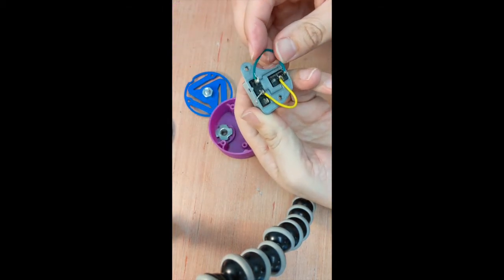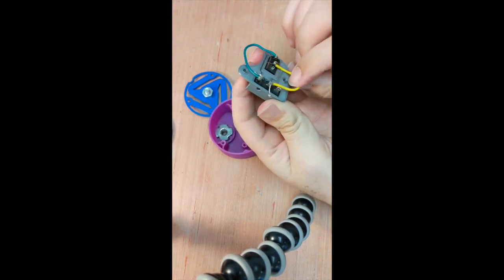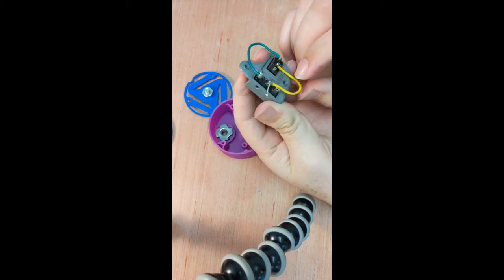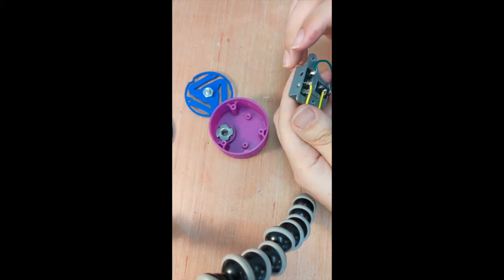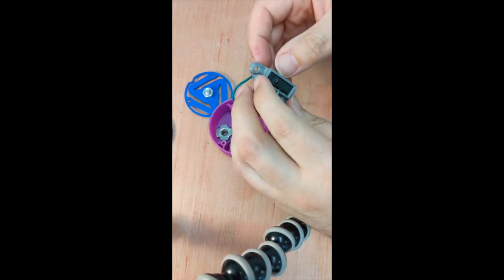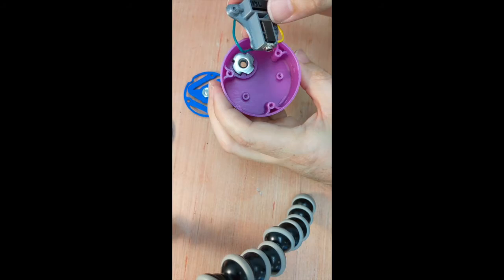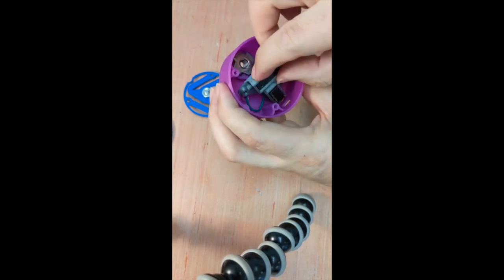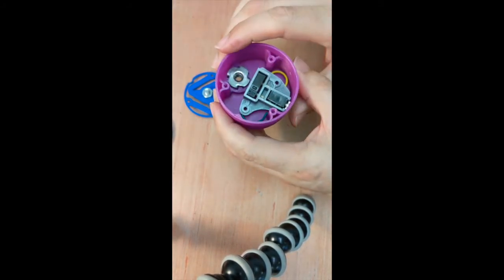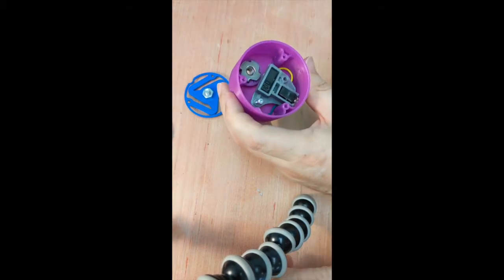Before we assemble everything, check to see if the wires on the switch jack assembly don't cover the two screw holes. Insert the assembly into the base bottom by aligning it with the two screw posts and the mono jack hole on the side. Insert two screws to keep it in place.